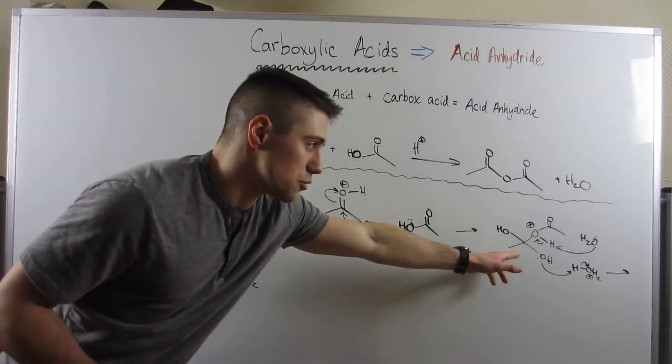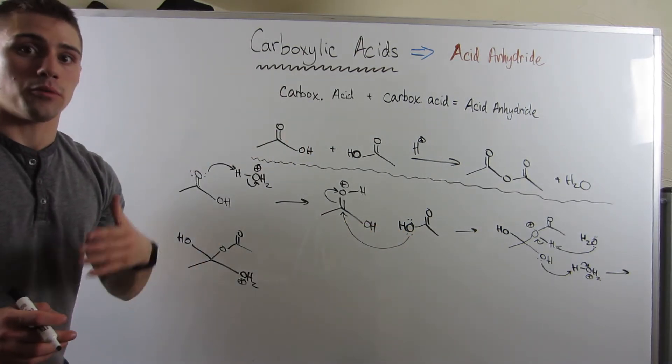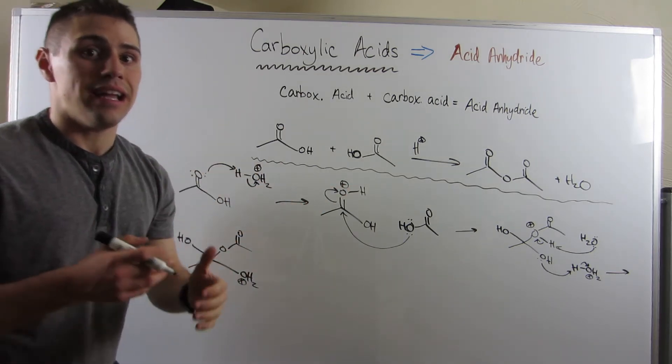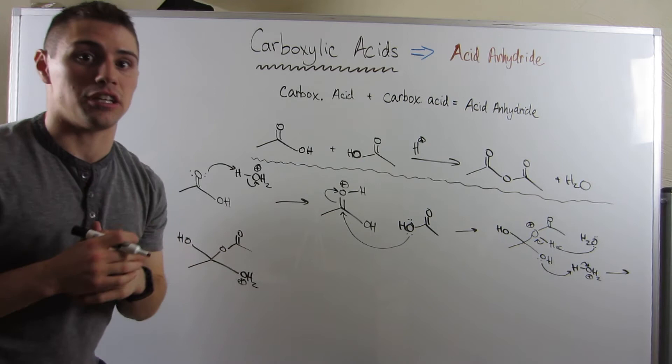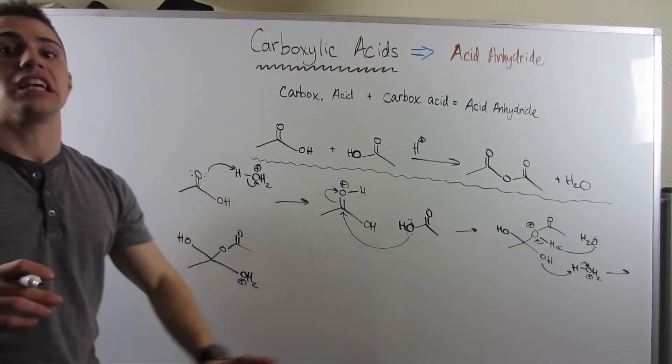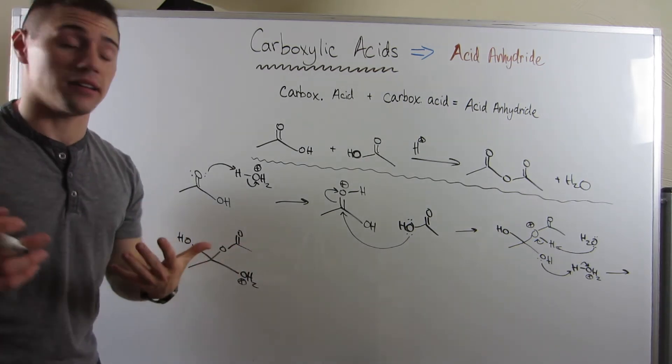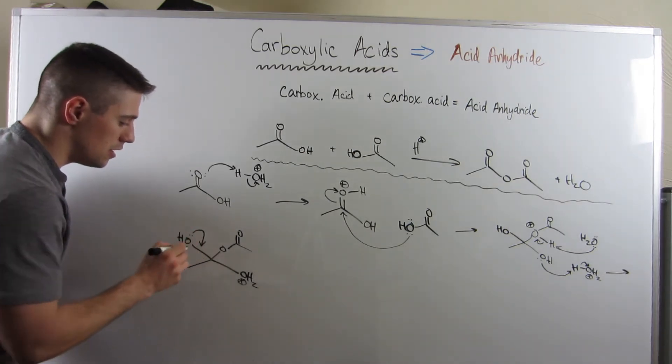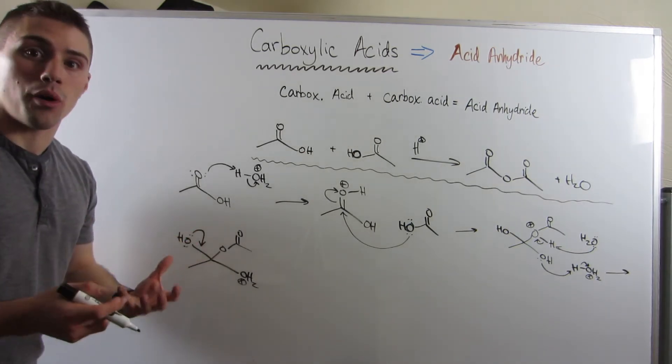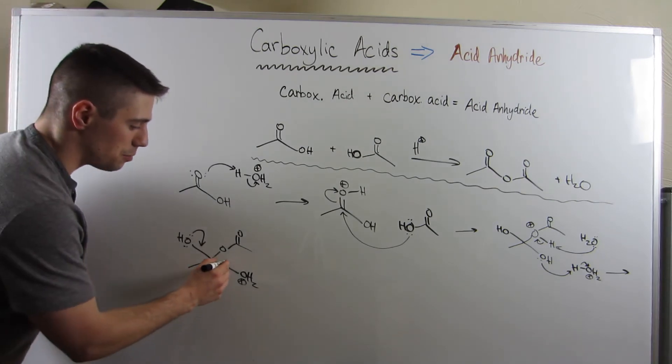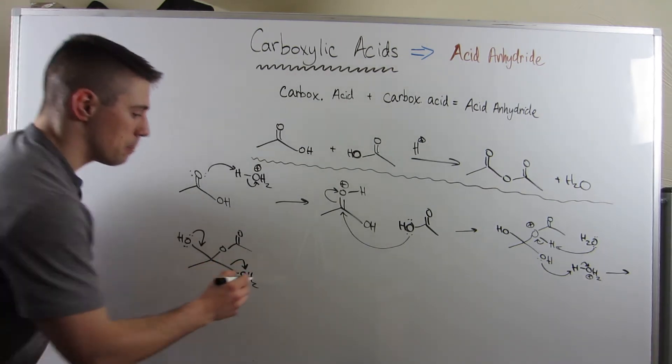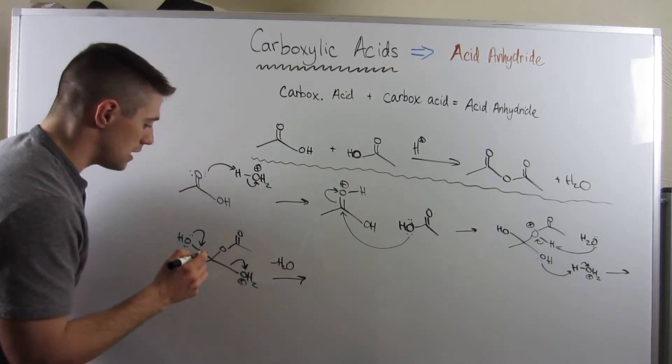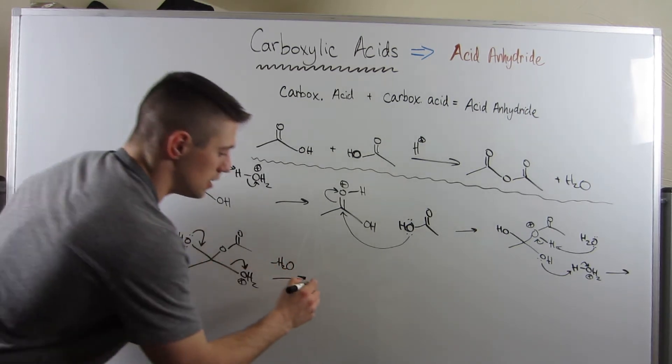So this was our tetrahedral intermediate. Remember, we added a piece and we formed our tetrahedral intermediate. Now, we need to collapse our tetrahedral intermediate to do our elimination step, this addition elimination mechanism. So I'm going to reform our carbonyl, swing these electrons down to form a double bond. That's going to be the driving force to pop off this water, a good leaving group. That is our minus H2O step.